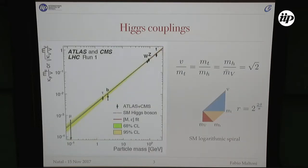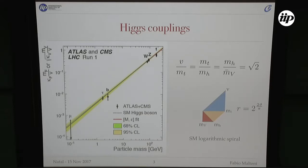What do we know also? We know this famous plot: the particle mass is related to the Yukawa coupling. We have all the particles which are heavy except one in this plot — one particle is missing, which is the Higgs itself. So the Higgs: we know its mass, but we don't know the coupling of the Higgs to itself. We are missing one important piece of information. For those who like numerology, you can organize the masses of every particle in the standard model into a logarithmic spiral — the standard model logarithmic spiral.